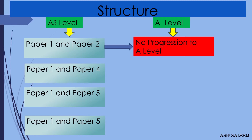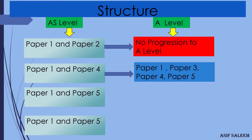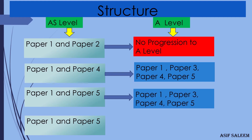If you have done Paper 1 and 4, you can complete the other two papers — Paper 3 and Paper 5 — which gives you combination one: Papers 1, 3, 4, and 5, earning you an A-Level certificate. Similarly, if you have done Paper 1 and 5, you can then choose Paper 4 and Paper 3 to again achieve combination one.